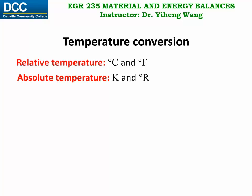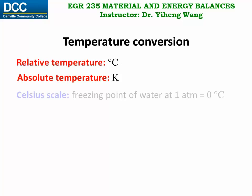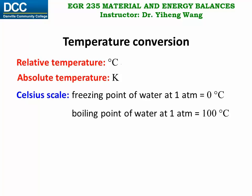Let's look at the Celsius scale first. Zero degree Celsius is defined at the freezing point of water at one atmosphere, and 100 degree Celsius is defined at the boiling point of water at one atmosphere. Room temperature is about 21 degree Celsius. Using the Celsius scale, the SI unit for absolute temperature is Kelvin, and zero Kelvin is known as the absolute zero — theoretically the lowest possible temperature where all molecules stop their motion — and it equals negative 273.15 degrees Celsius.